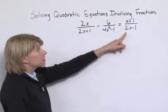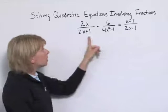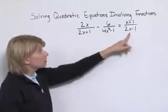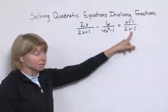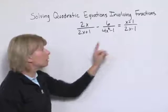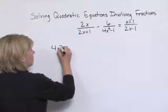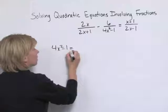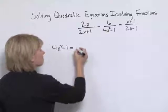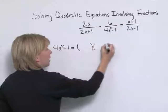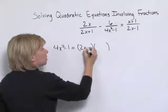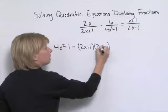Our helpful hint said to factor any of the denominators that can be factored. Notice the first denominator and the last denominator can't be factored, but the middle one can be. 4x squared minus 1 is a difference of squares, and that factors into 2x plus 1 times 2x minus 1.